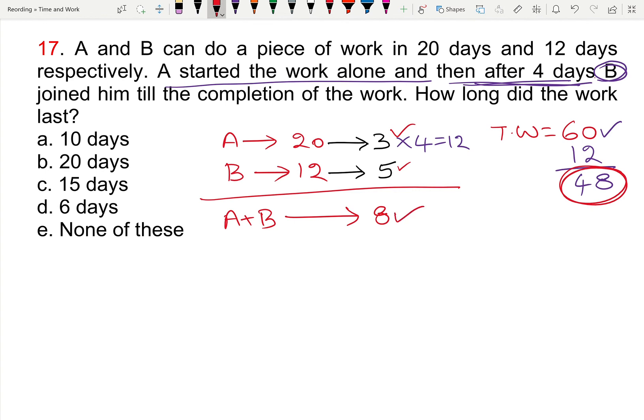Number of days: 48 units remaining work, per day 8 units are done. 48 divided by 8 is nothing but 6 days.